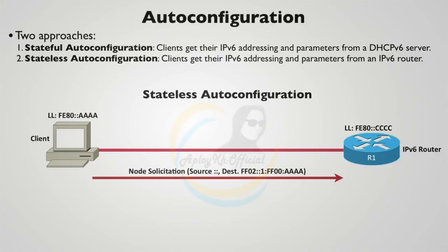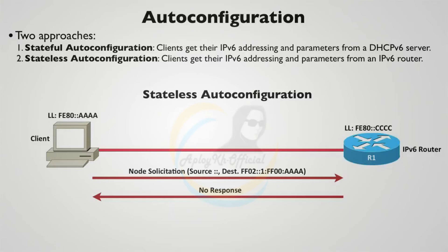What we're hoping for is no response. If we don't get a response, that means the multicast group has no members — nobody else has a link-local address ending in those 24 bits, so nobody shares our link-local address. Now we need to get our global unicast IPv6 address. We could wait for the router to send a periodic router advertisement, but we can proactively ask for it so we don't have to wait.